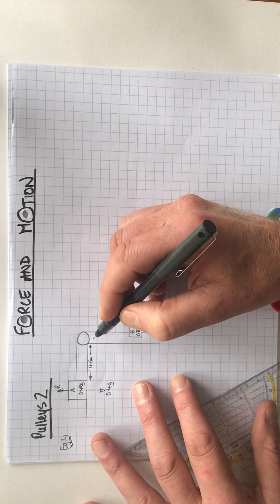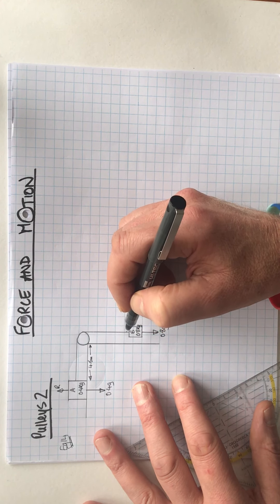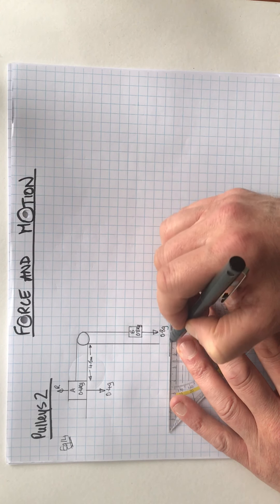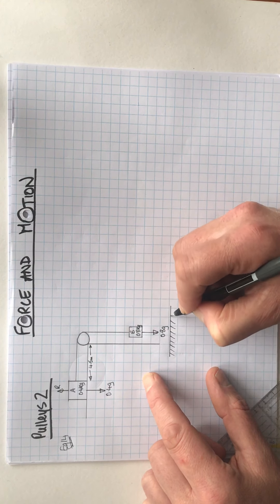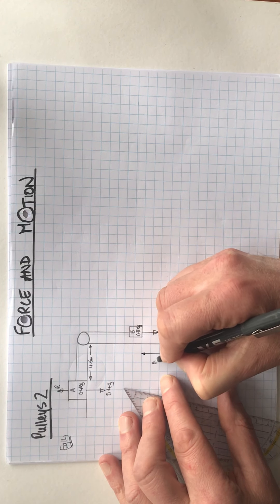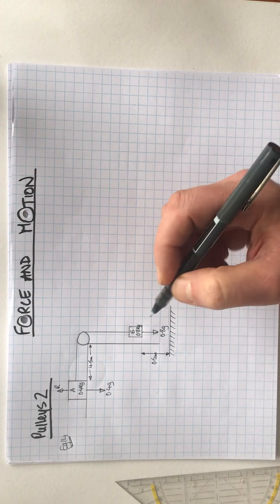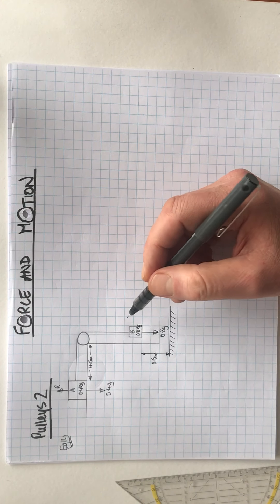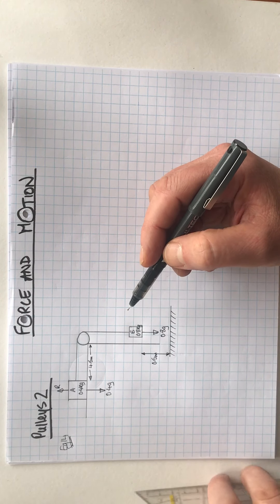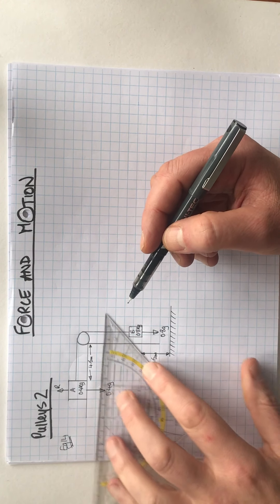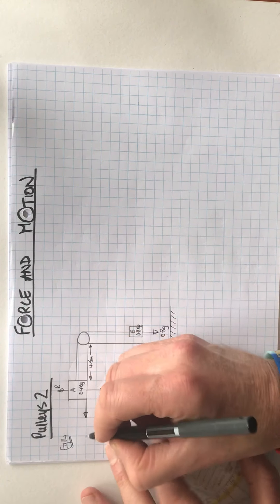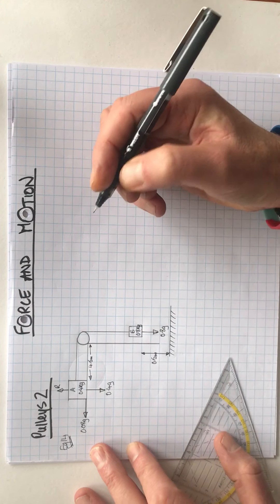Particle A lies on a rough horizontal table 4.5 metres from a smooth pulley. So this distance here is 4.5 metres. This is a small, smooth pulley with no friction. The string passes over the pulley and B hangs freely with the string tight, 0.5 metres above horizontal ground. So down here we've got the ground, and this distance is 0.5 metres. A frictional force of magnitude 0.08g opposes the motion of particle A. So we have a frictional force here going that way, which is 0.08 times acceleration due to gravity.